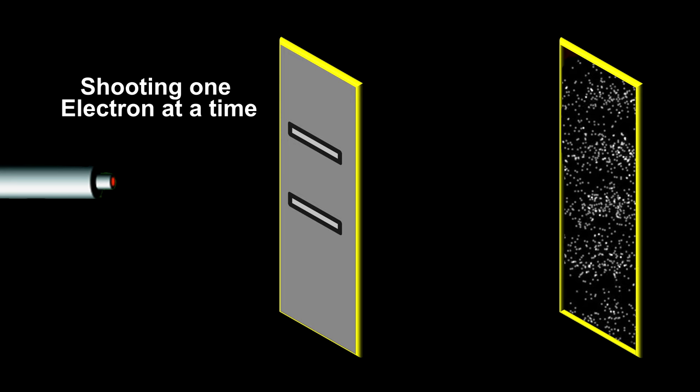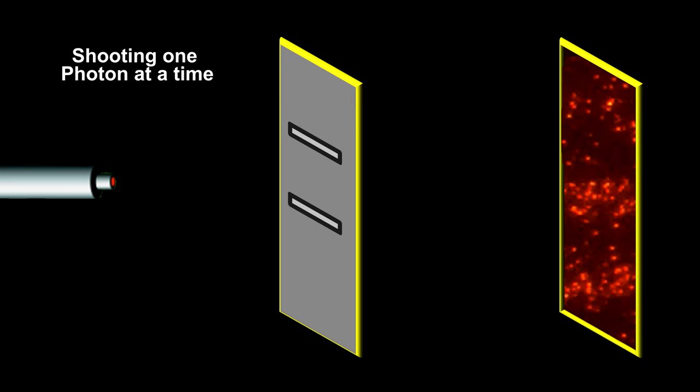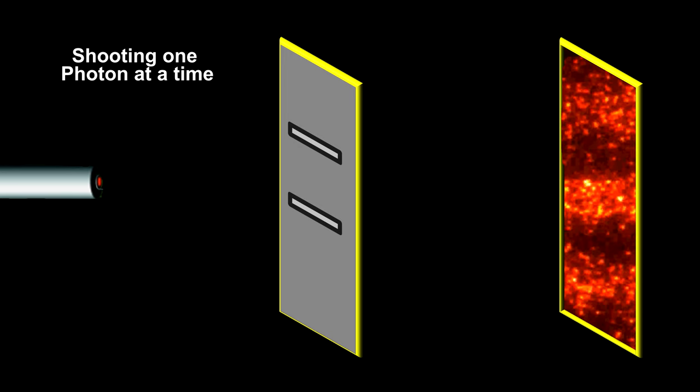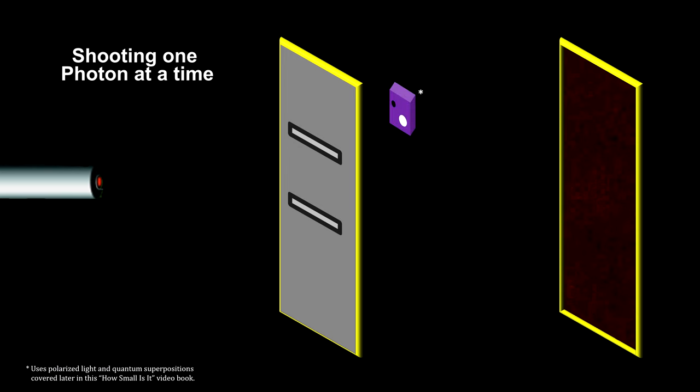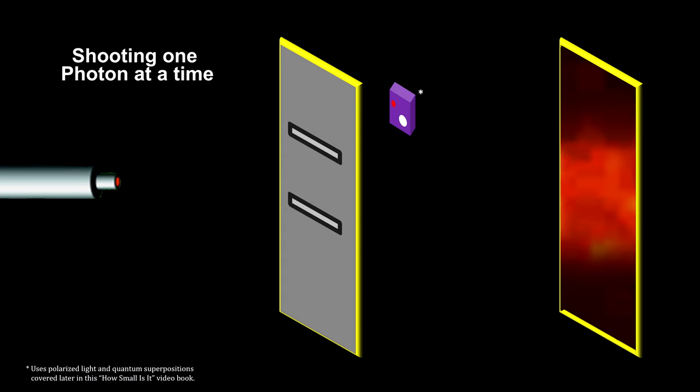The key to the experiment was to observe what happens when we detect which of the slits a particle went through. For photons, we never explained how we could detect a photon without disturbing its path. So this final chapter brings us full circle, where we will cover in detail how this was done.